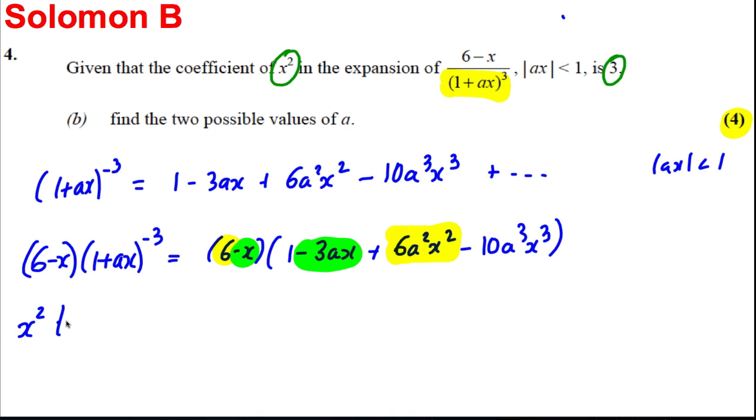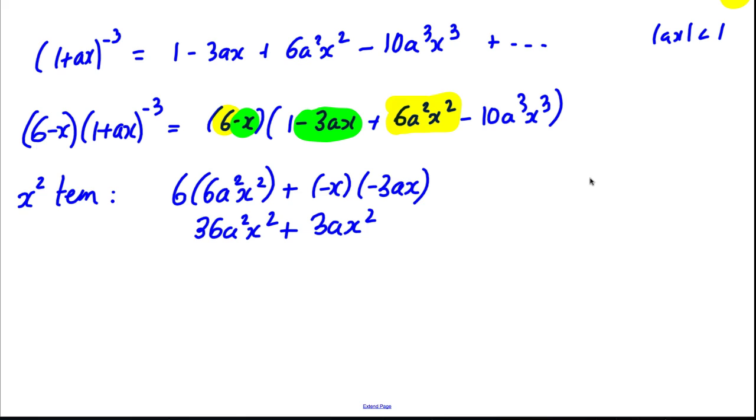So the x squared term, well it would be 6 multiplied by 6A squared X squared, and then it would be plus negative X multiplied by negative 3AX. So it would be 36A squared X squared plus 3AX squared. And combining these, factorizing out the x squared, we've got 36A squared plus 3A of them.